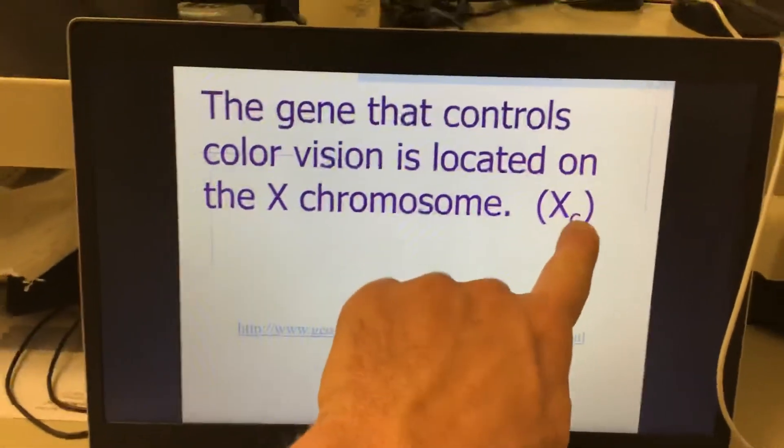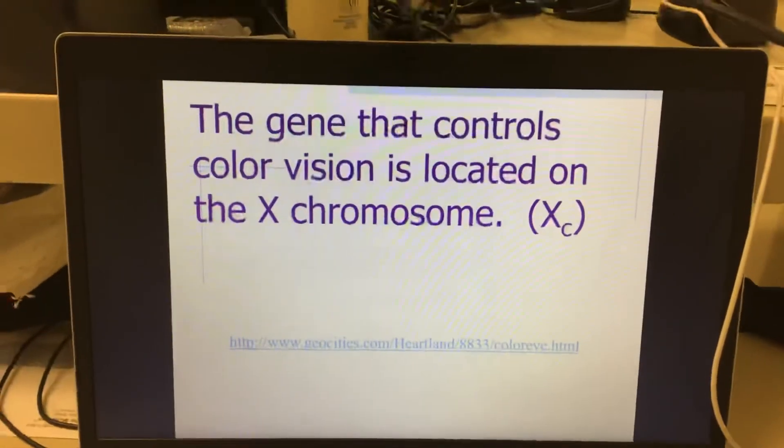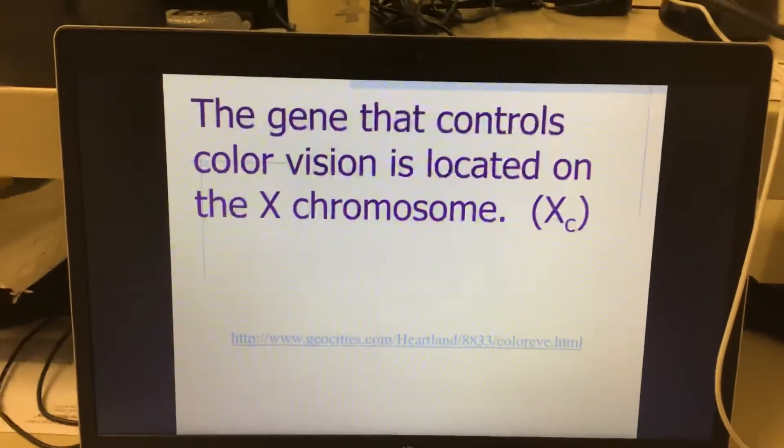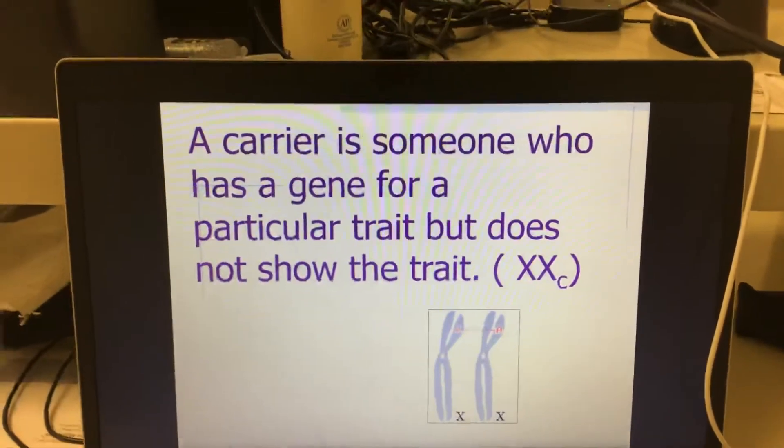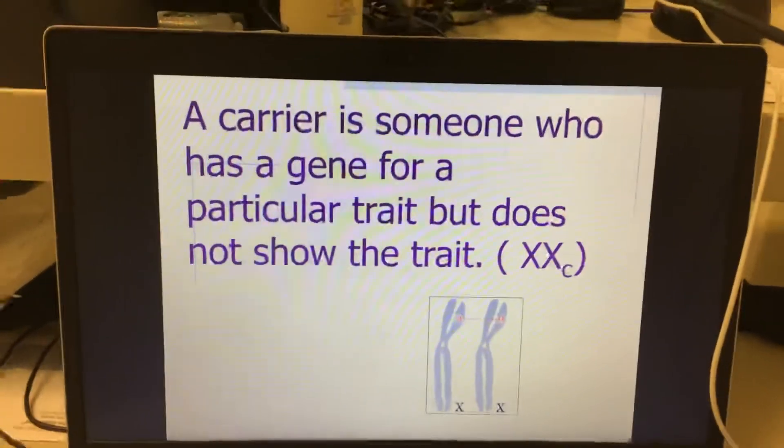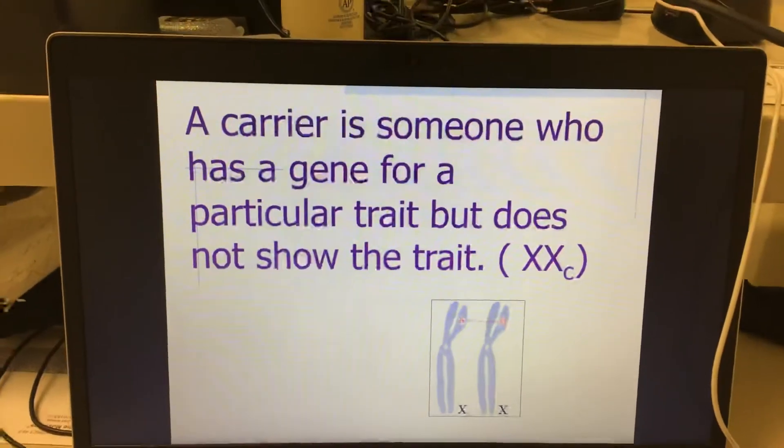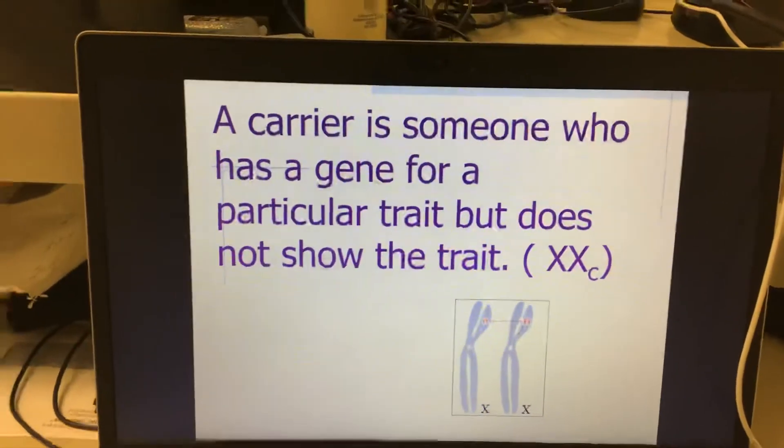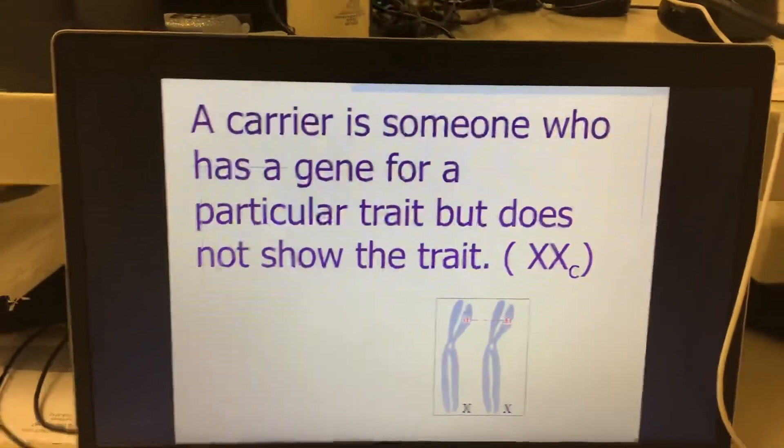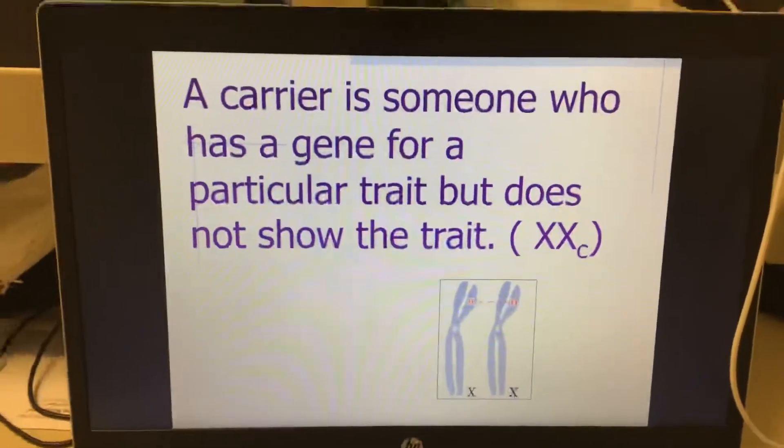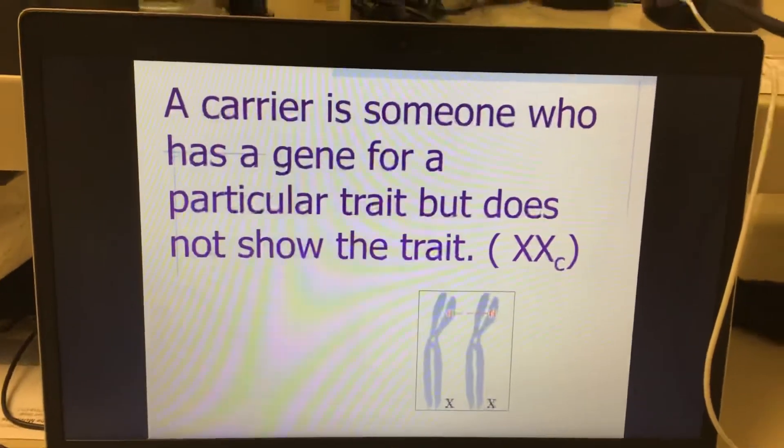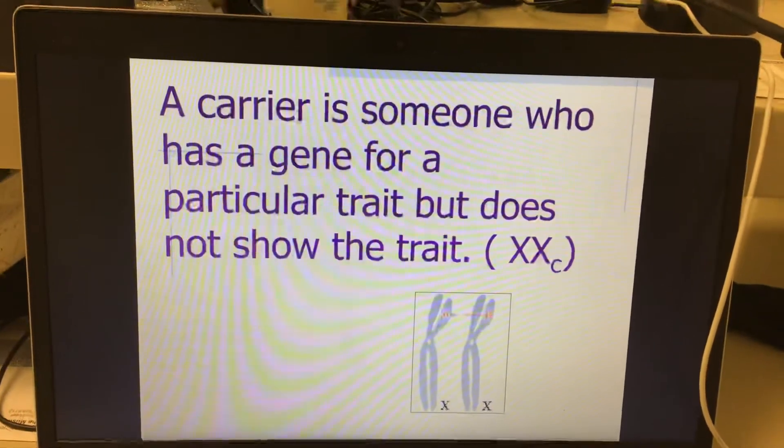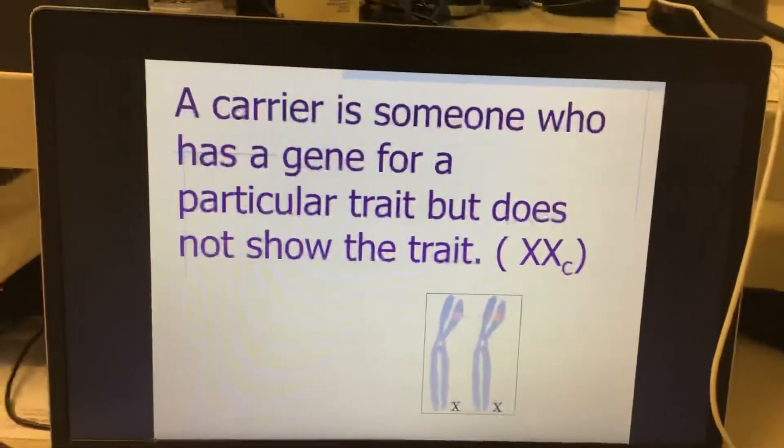The gene that controls color vision is located on the X chromosome. This little C represents, actually, color blindness. It's on the X chromosome. I would like you to write this down. A carrier is someone who has a gene for a particular trait, but does not show the trait. A carrier, and maybe underline carrier, is someone who has a gene for a particular trait, but does not show the trait.